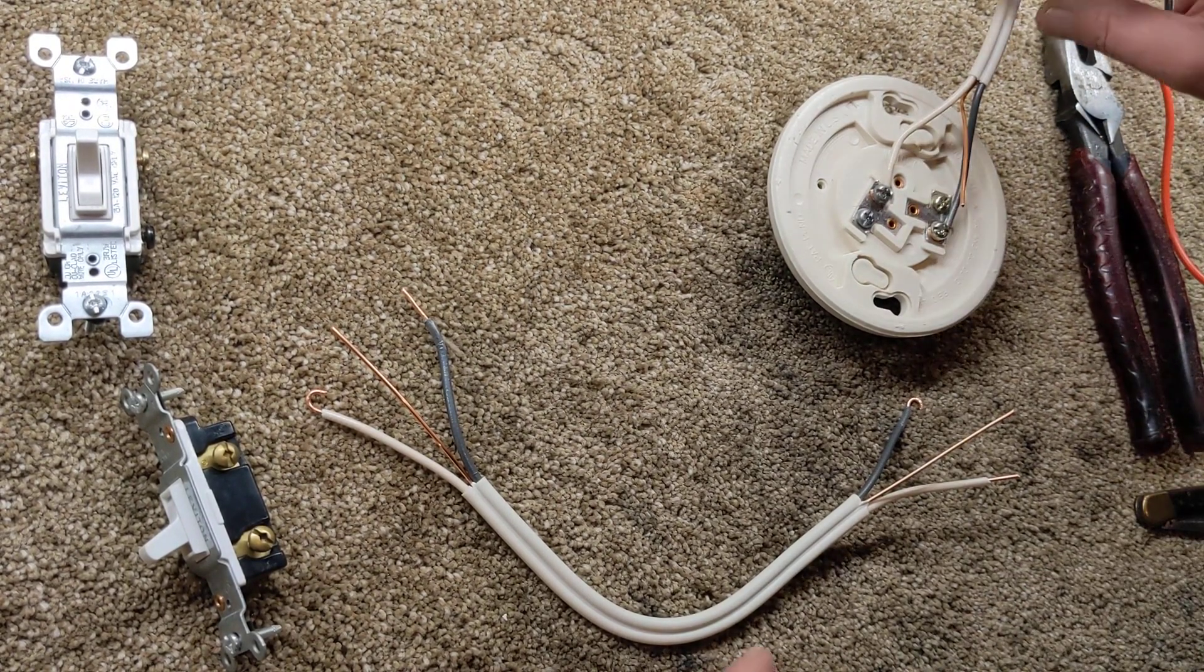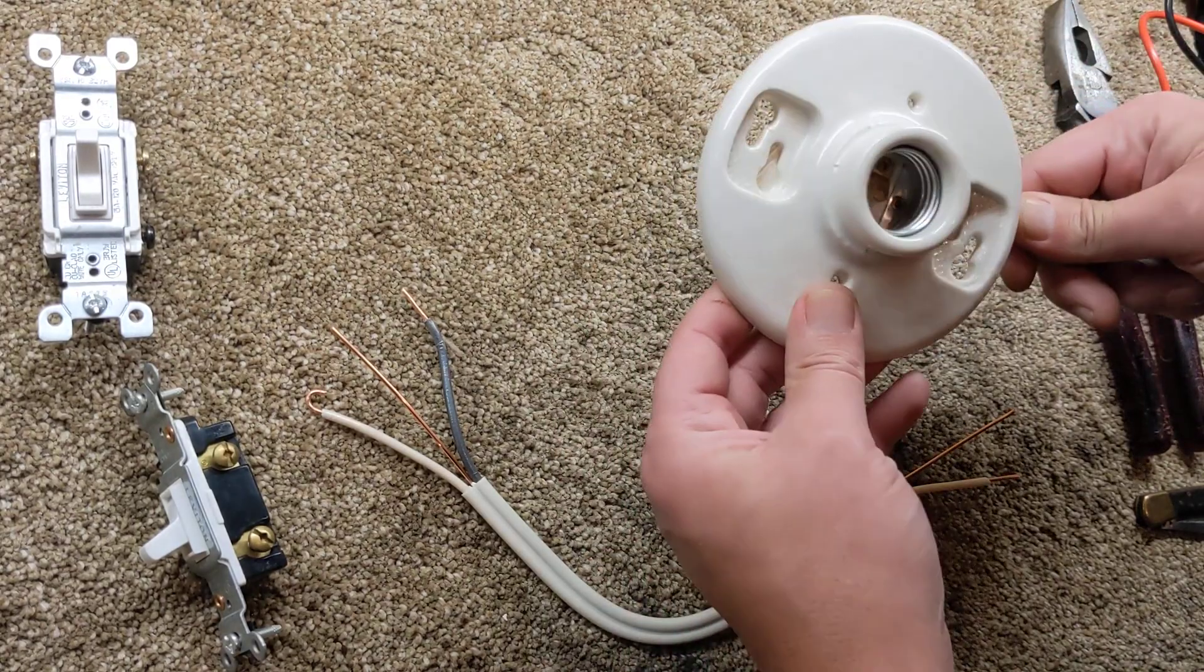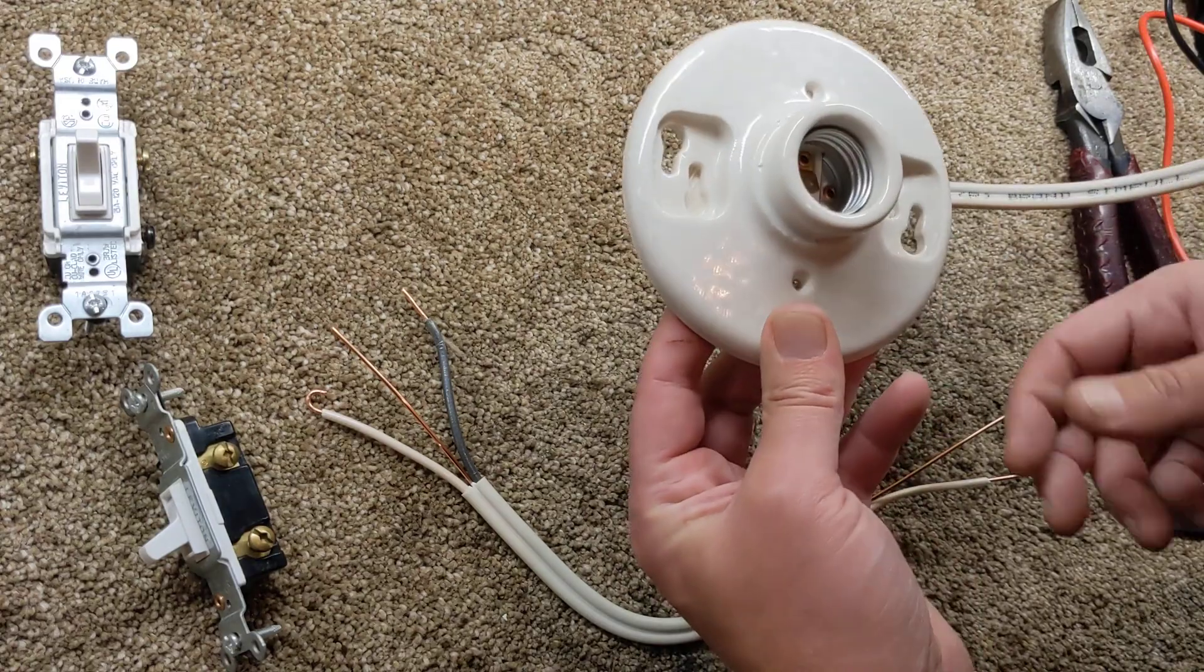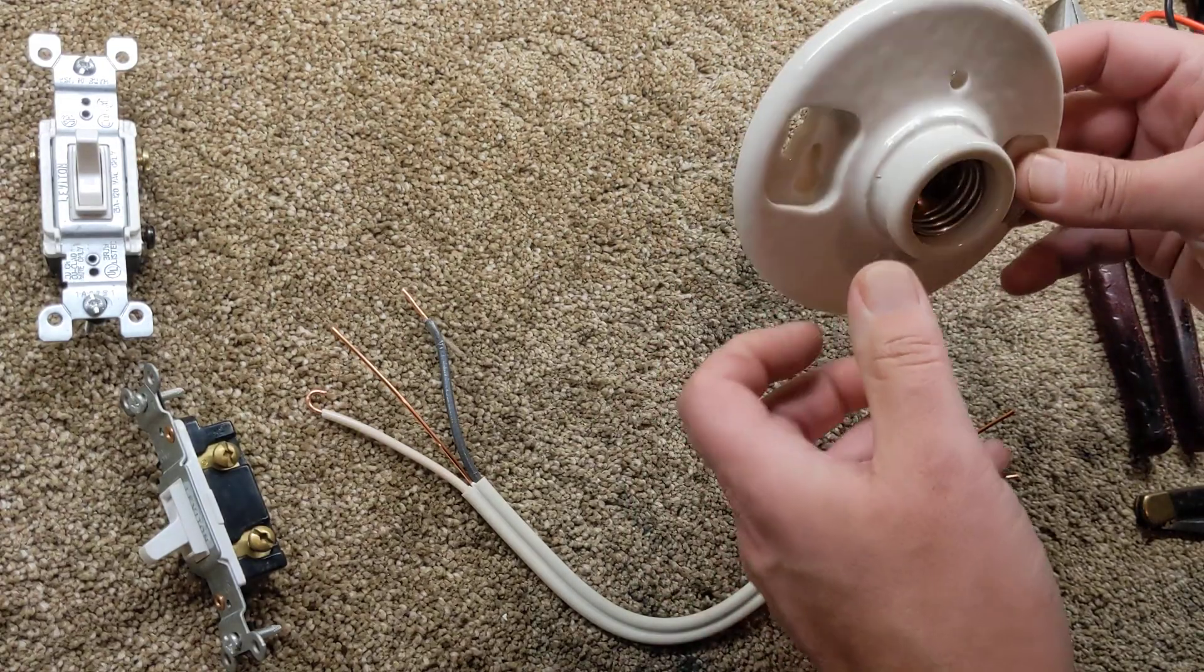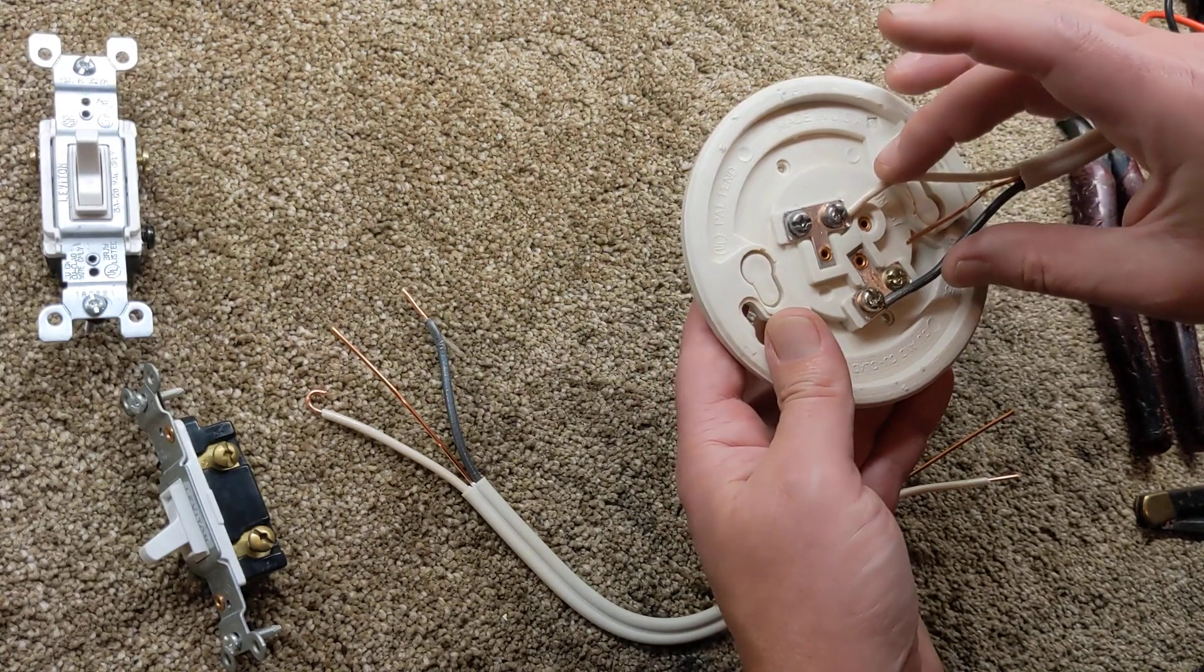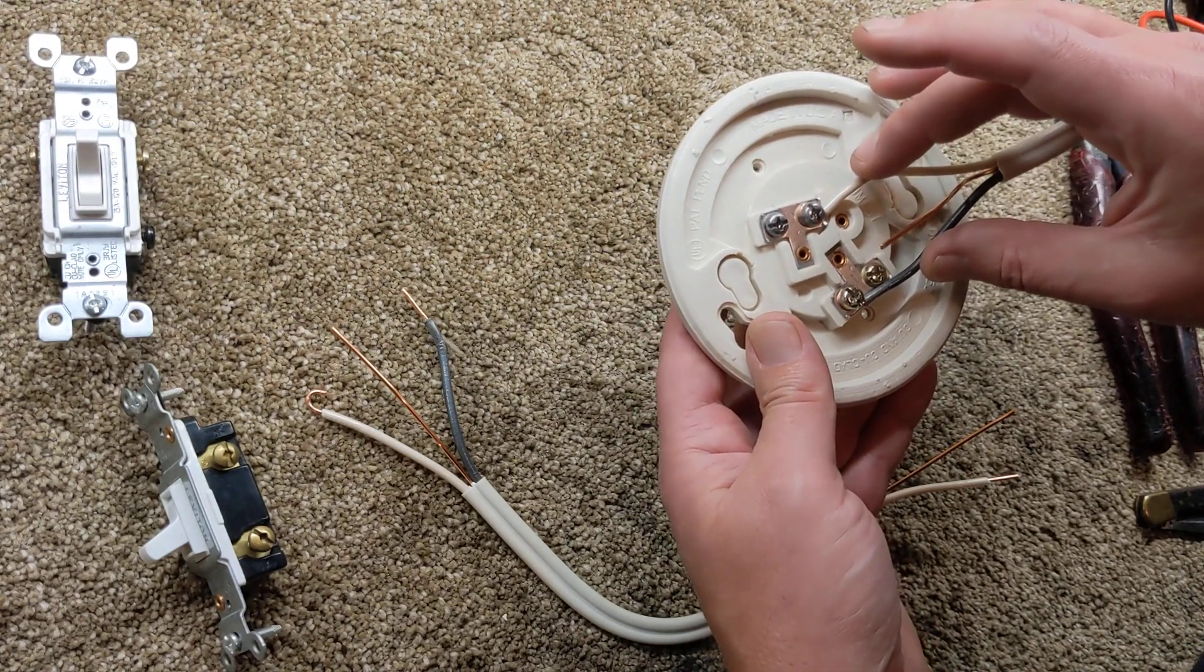We'll take this keyless as an example. This can represent any light, just a standard generic style, but it can be anything. Any light, you're going to have your hot and your neutral come to it and a ground. Some will have a spot for ground, same as on switches. Some will not.